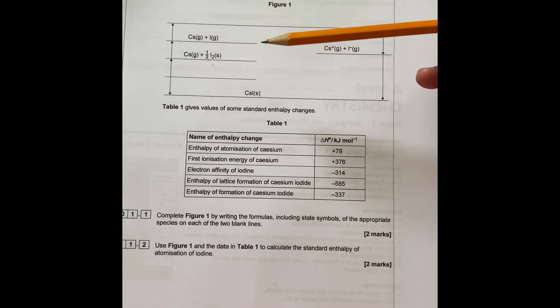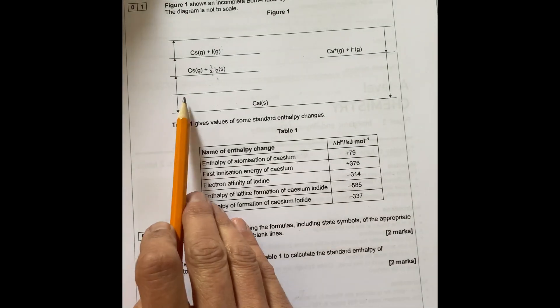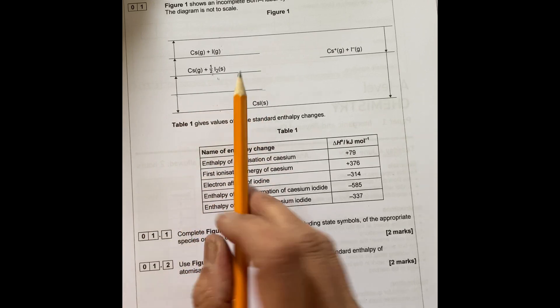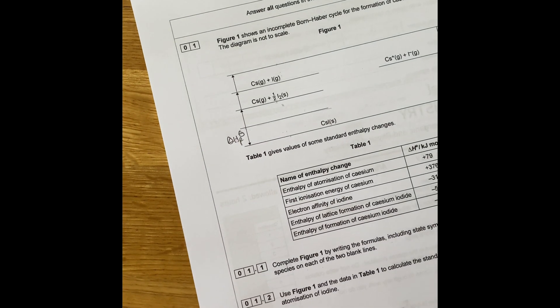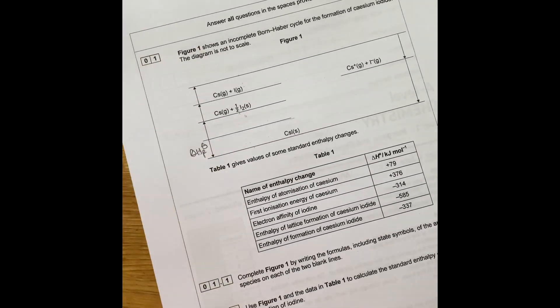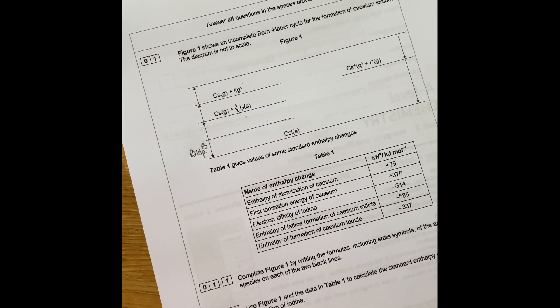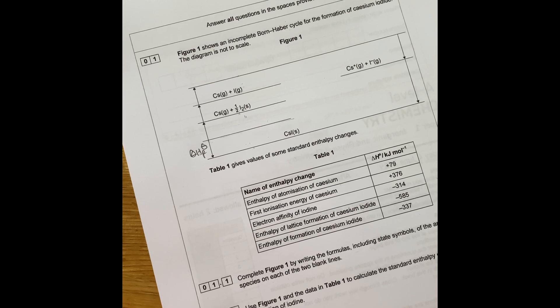So the definitions you need to know here: first, it starts here at zero, this is the line. When it goes down, this is enthalpy change of formation. So you need to know the enthalpy change of formation, which is enthalpy change when one mole of compound is formed from its elements in their standard states and standard conditions.